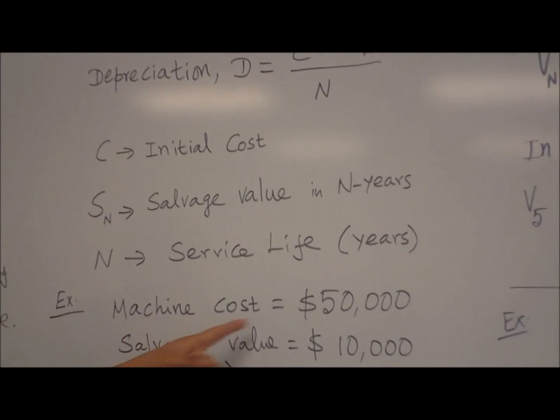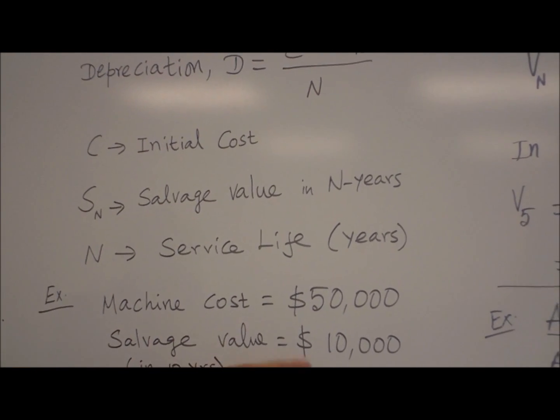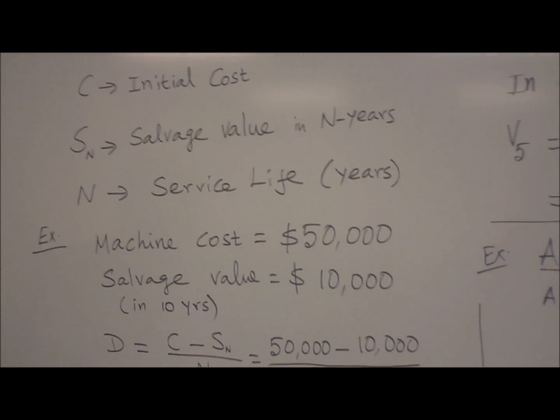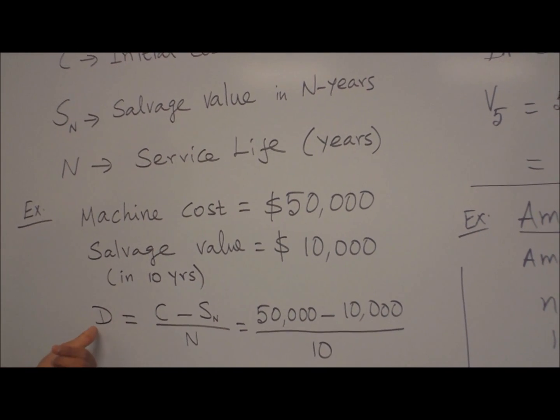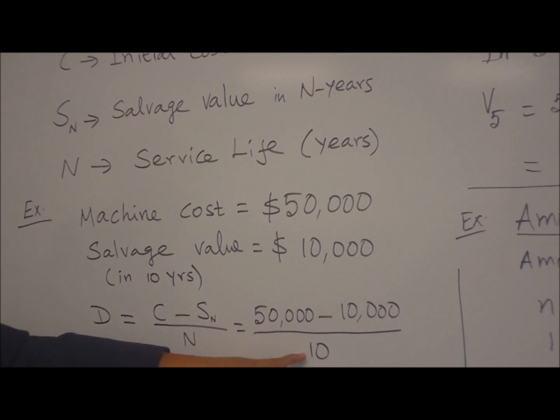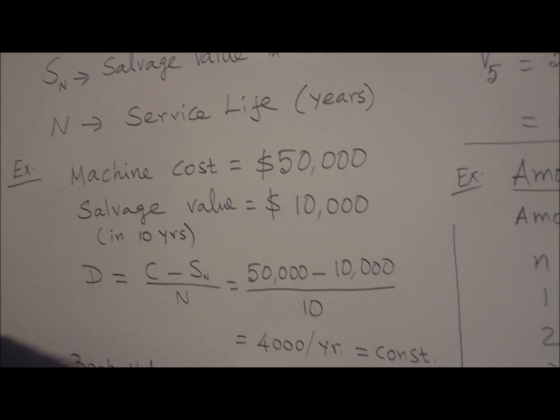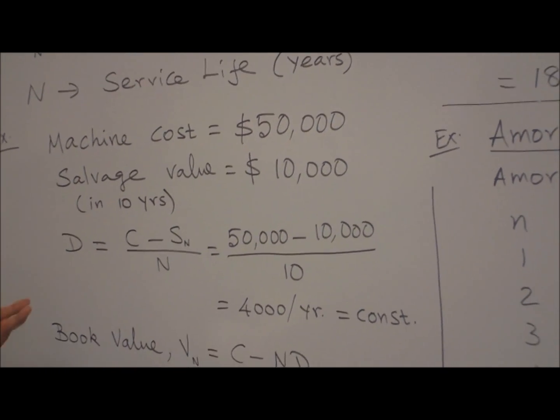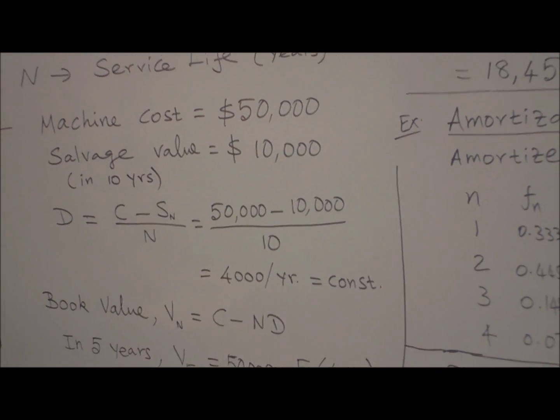For example, let's say the machine cost is $50,000, salvage value is $10,000 in 10 years. How do you find the depreciation? Calculate D equals initial cost minus salvage value divided by number of years. You get $4,000 per year. It's a constant amount of depreciation every year.